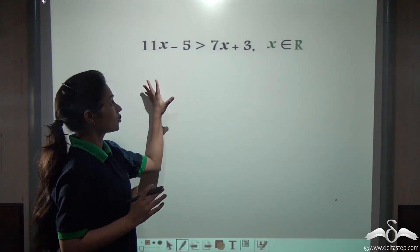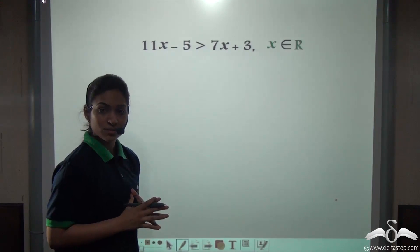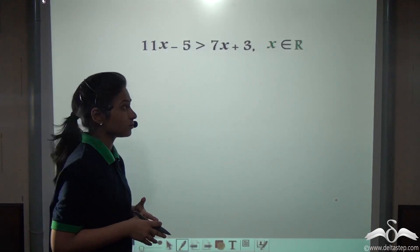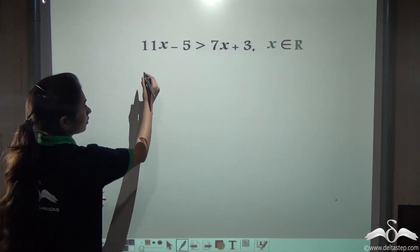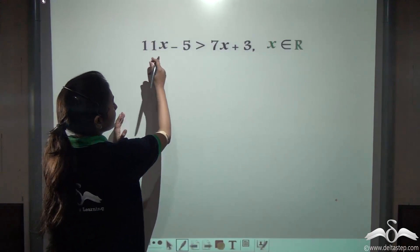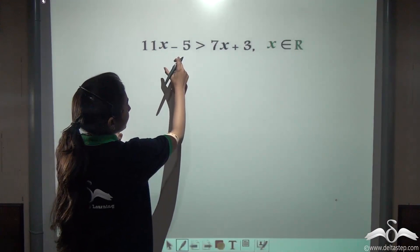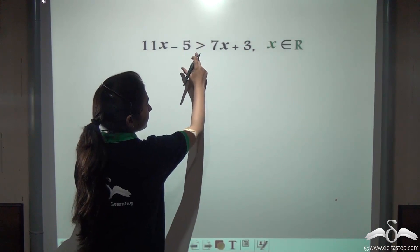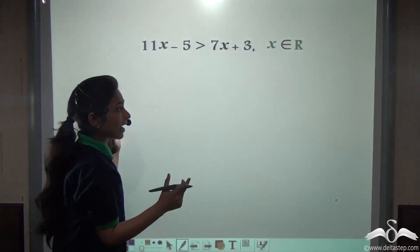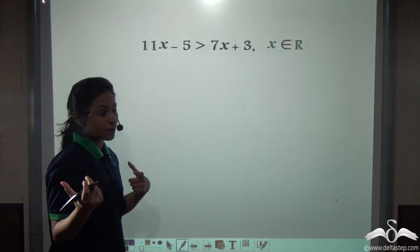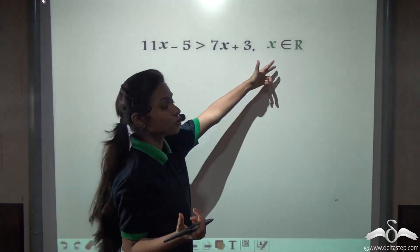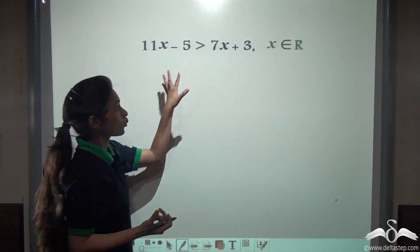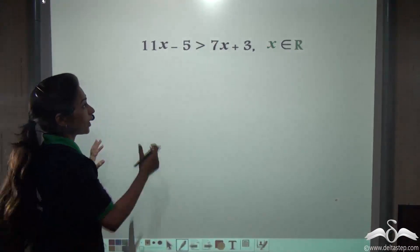Do you know how to solve such inequations? Here you can see 11x minus 5 is greater than 7x plus 3, and x, our variable, belongs to real numbers. So when you solve this, what do you get?